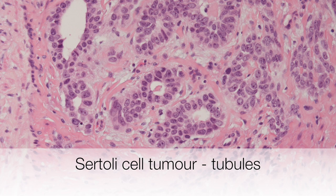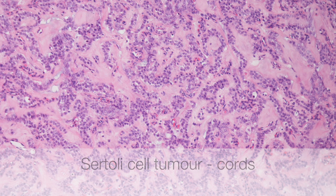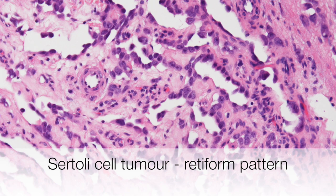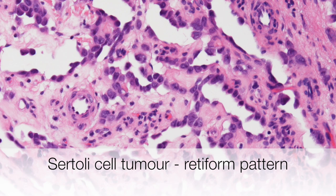In this area, the tumour shows prominent cord formation and many of the cords contain lumina. This part of the Sertoli cell tumour shows a striking resemblance to rete testis, and this is a nice example of the retiform pattern that can be seen in Sertoli cell tumours.